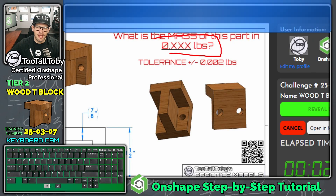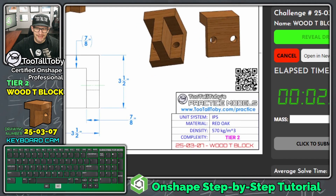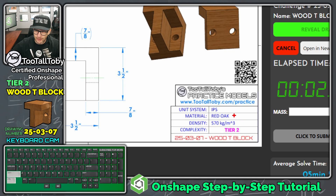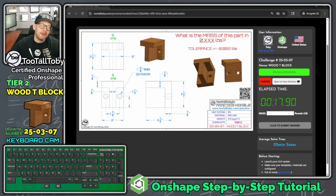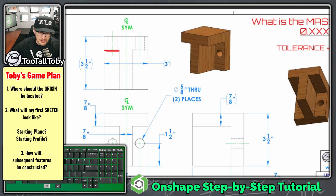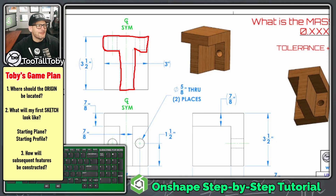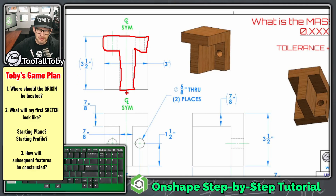We've got a model in inches and pounds today. Looks like this thing is made of red oak — a unique material — 570 kilograms per cubic meter, and we're doing this in inches. Even though the clock is running, I always like to start out with a game plan. In this model, this T-shape really jumps out at me as the starting shape. I can't imagine why that letter T would mean so much to me.